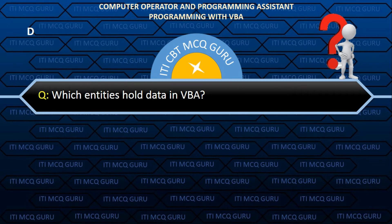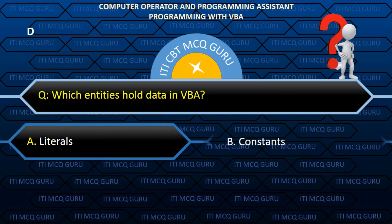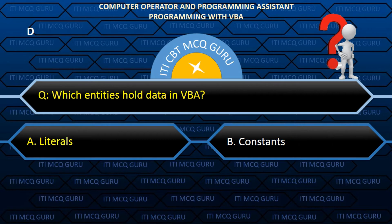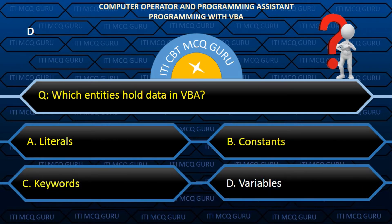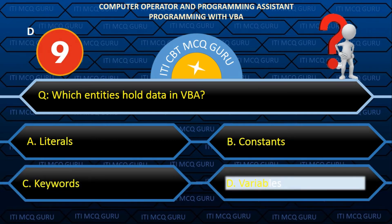Which entities hold data in VBA? Answer: D. Variables.